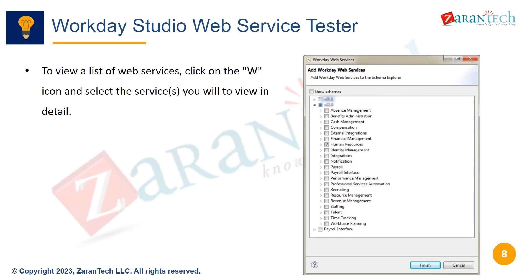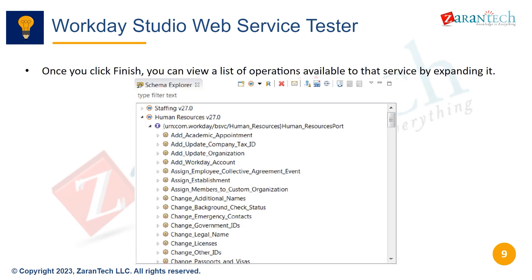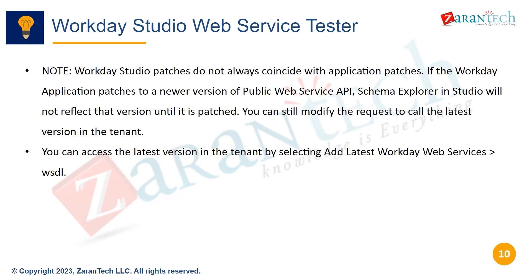To view available web services, click the W icon and select which services you want to explore in more detail. Once you add a web service, you can expand it to see a list of available operations. Note that Workday Studio patches may not always match the latest Workday application patches. To call the newest API version in your tenant, select Add Latest Workday Web Services.